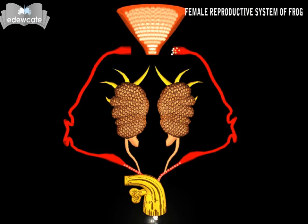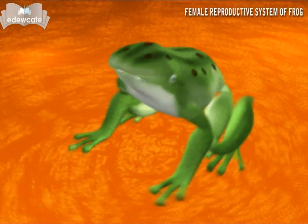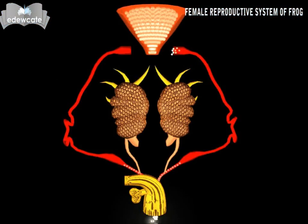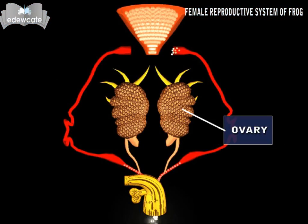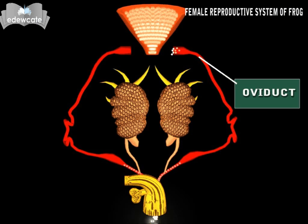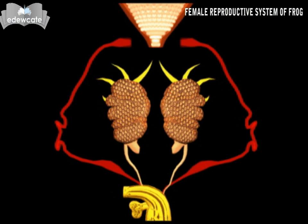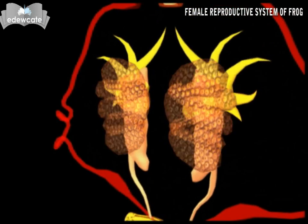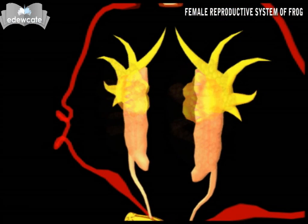Female Reproductive System of Frog. The female reproductive system consists of a pair of ovaries and a pair of oviducts. Each ovary is attached to the kidney.